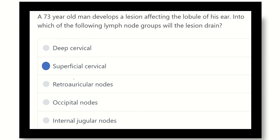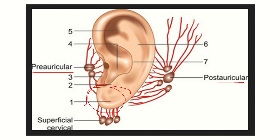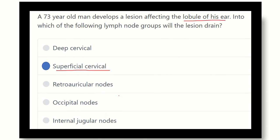So our final answer: from the lobule of the ear, that means the lower part — the ear lobule — the lymphatics drain into the superficial cervical lymph node. Thank you all.